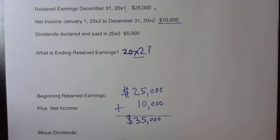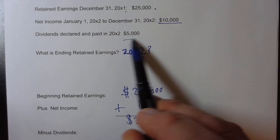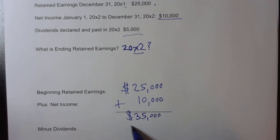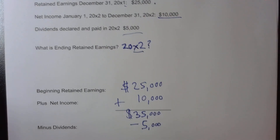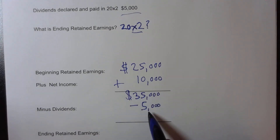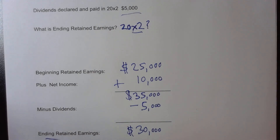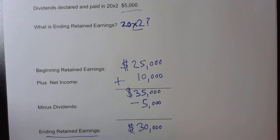We subtract out the dividends. We're told that the dividends declared and paid this year are $5,000, so I'm going to subtract out $5,000. That leaves us $35,000 minus $5,000, which is $30,000 — our ending retained earnings balance for December 31st, 20X2.